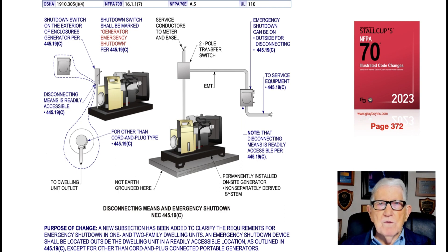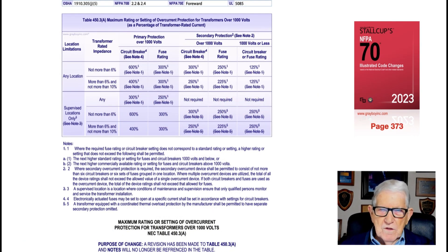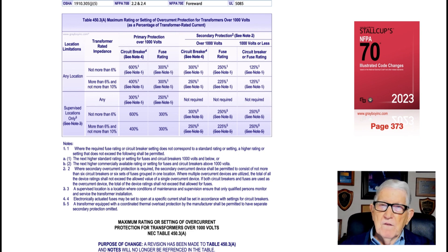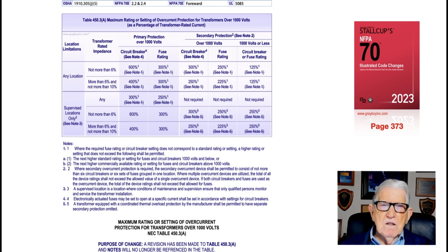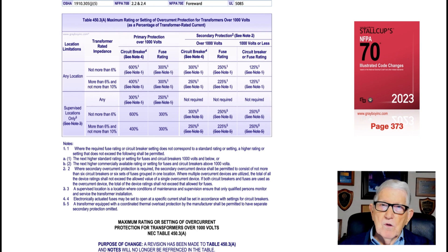This illustration deals with the maximum rating or setting of an overcurrent protection device for transformers rated over 1,000 volts in accordance with 450.3(A) and Table 450.3(A). Notice that revisions have been made within the table itself — Note 1 has been deleted in various columns. You still have unsupervised locations, and then supervised locations where you can see revisions taking place. Revisions were also made to the notes below the table, so users should review those notes to see where they apply.